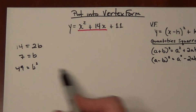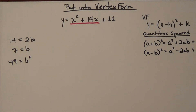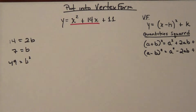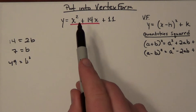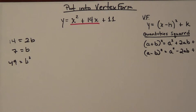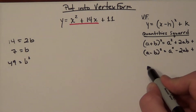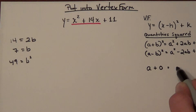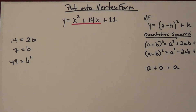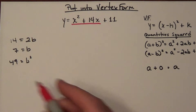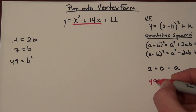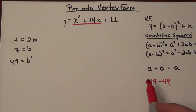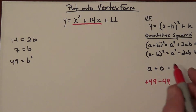Now I've got this b squared term, but the problem is where do I go from here? I'm not allowed to change this function's value — I'm only allowed to change the look of it. How do I change the look of something without changing the value? What comes to mind here is the additive property of zero: if I take some quantity and add 0 to it, I still get that original quantity. My quantity of zero is going to be based off of b squared — taking a positive 49 and a negative 49. Since 49 and minus 49 make 0, I won't be changing this quantity.